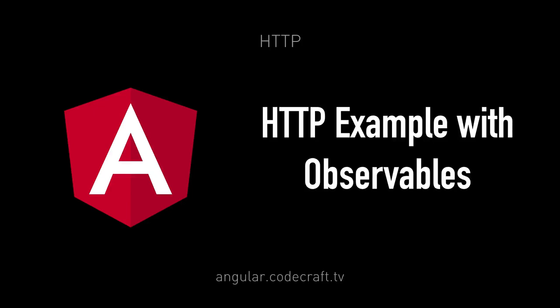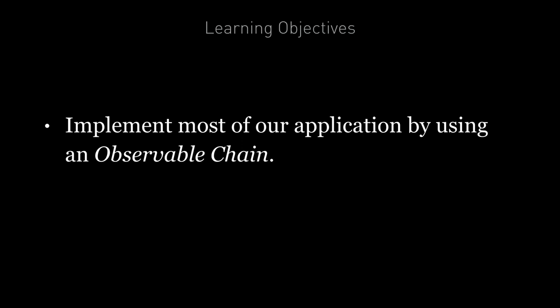In the previous lecture, we architected an application which made HTTP calls and handled all asynchronous work by using promises. In this lecture, we are going to implement exactly the same application, but by using observables instead. Our goal in this lecture is not just to replace promises with observables, but to go deeper and implement most of our functionality with an observable chain.